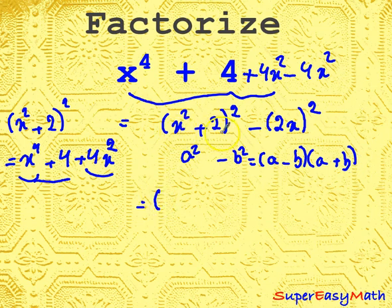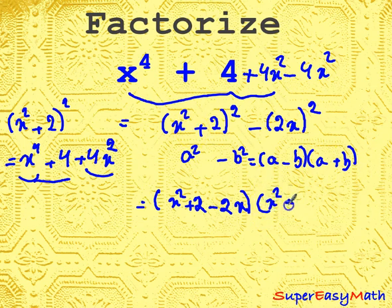So we get a equals x^2 + 2, minus b which is 2x, and a plus b, so x^2 + 2 plus 2x. This gives us (x^2 + 2 - 2x)(x^2 + 2 + 2x).